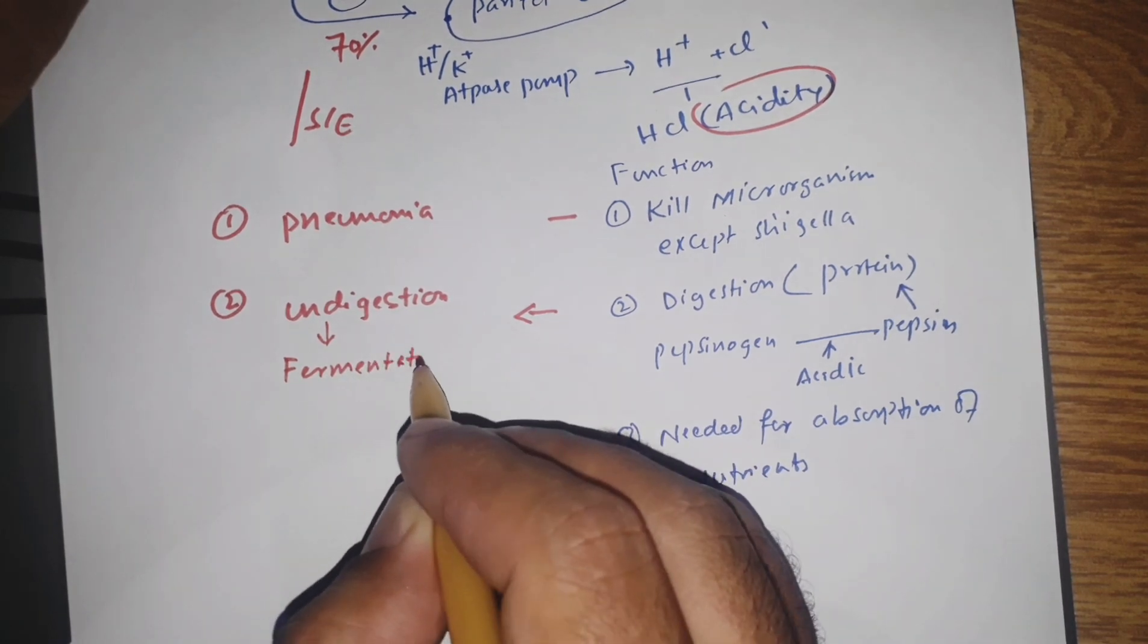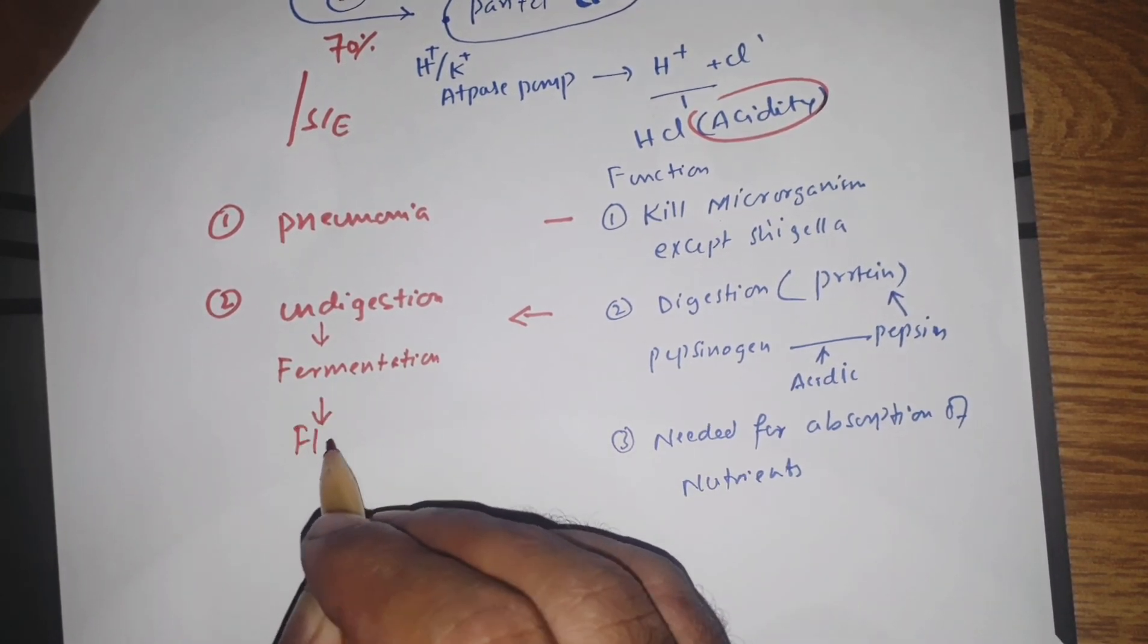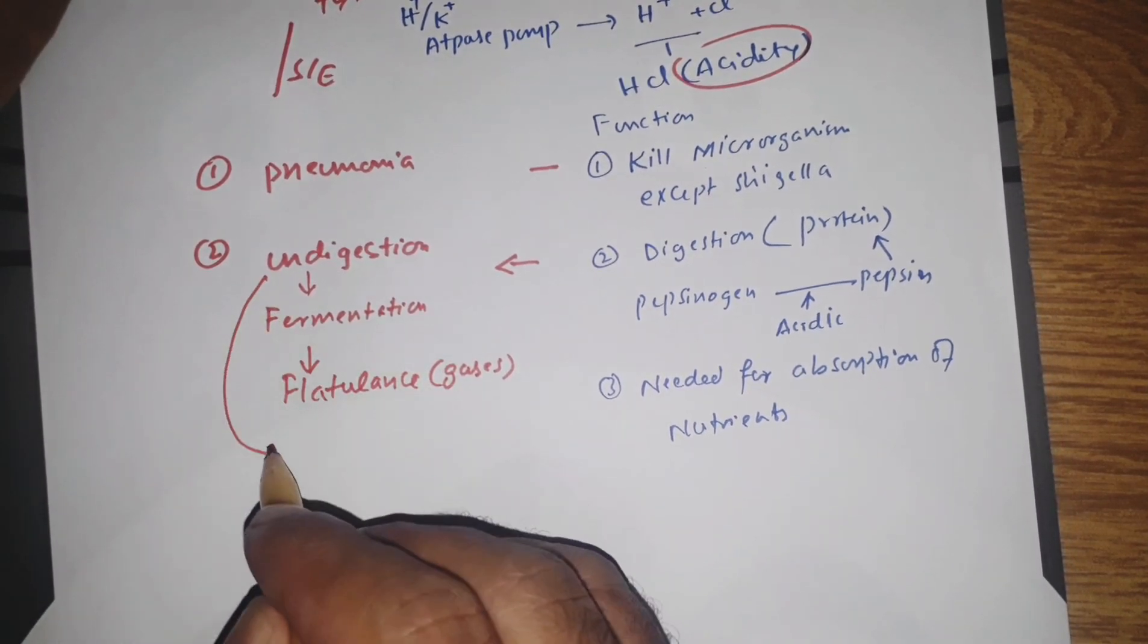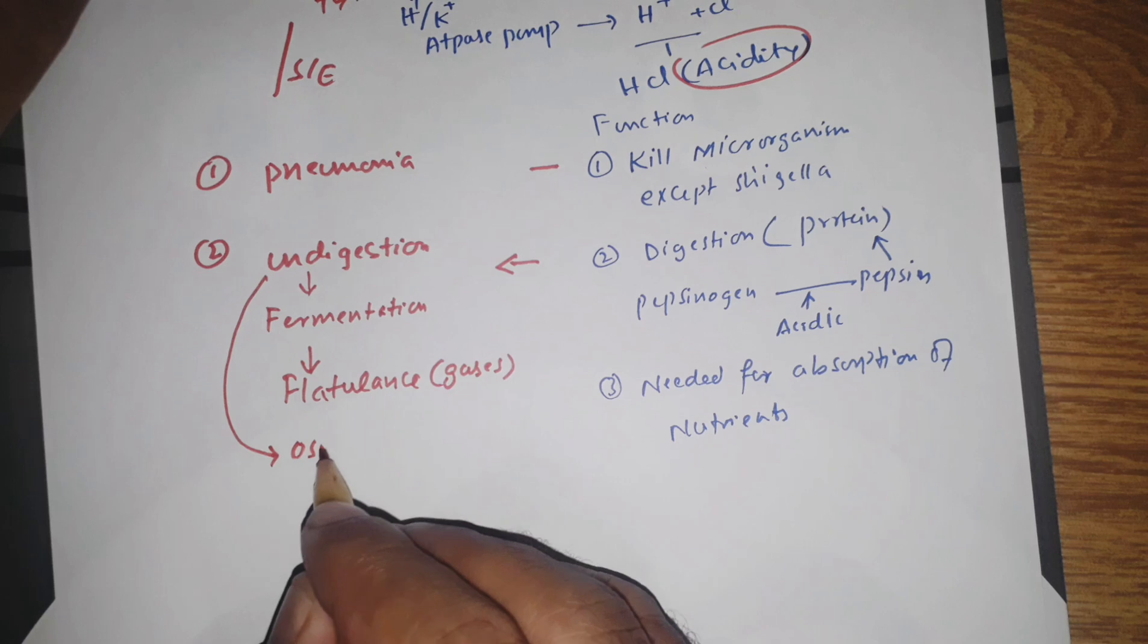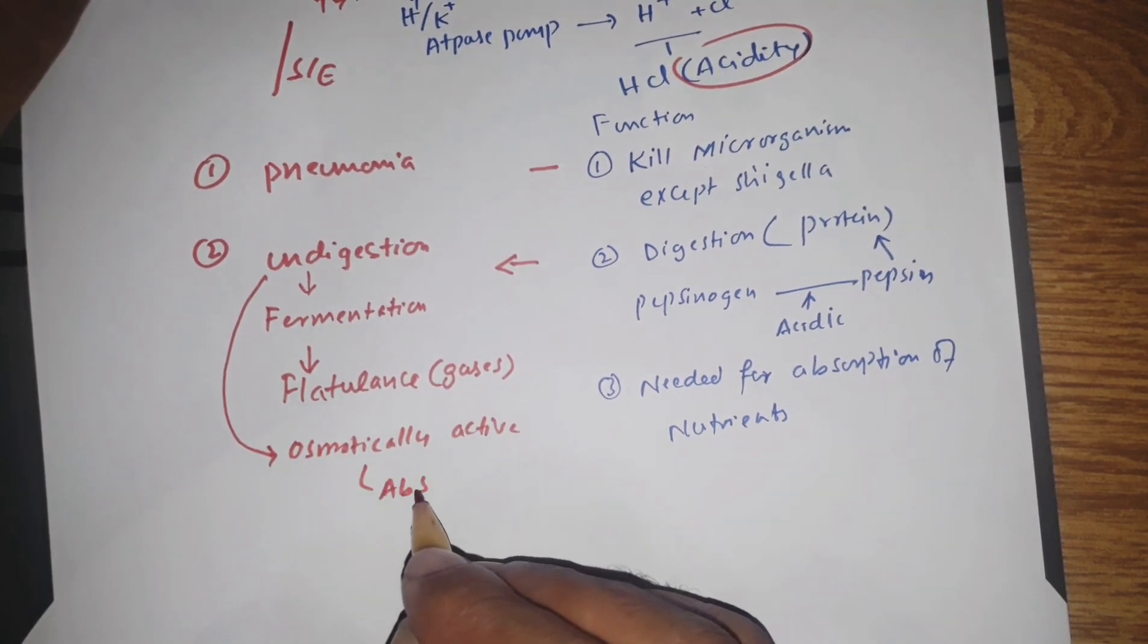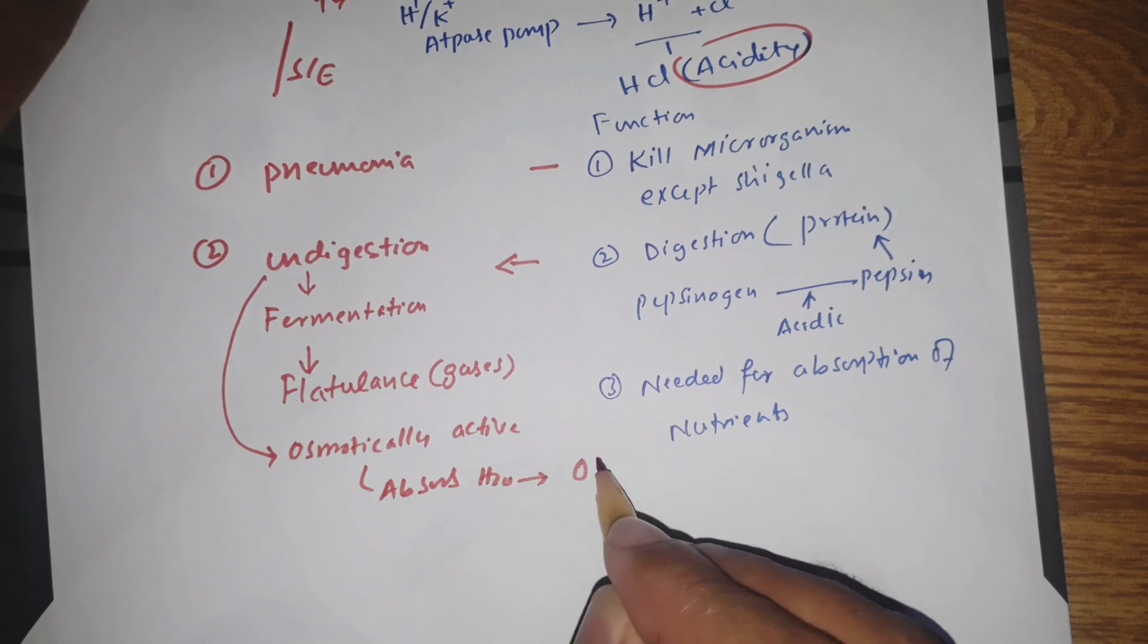Now these undigestible foods will go through fermentation, causing flatulence (gases). These undigestible food particles are osmotically active, which can absorb water and lead to osmotic diarrhea. That's why we don't give PPIs in diarrhea.